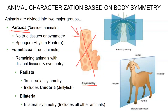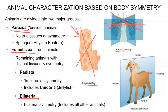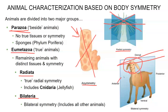Other than that, we have eumetazoa, or true animals, that have distinct tissues and symmetry. The first kind is radiata — they have radial symmetry. The best example is cnidaria, or jellyfish and sea anemones. You can cut it down the middle in any direction and get an exact mirror image — that's radial symmetry. Other organisms, bilateralia, have bilateral symmetry, meaning I can only make one cut down the middle to get two mirror images, and usually some sort of cephalization. Cephalization means we created a head, which usually includes sensory organs and a brain.